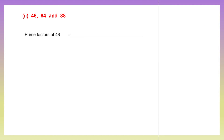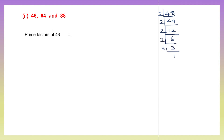Now, 48. Let's find the prime factors of 48 starting with 2: 2 into 24, 2 into 12, 2 into 6, 2 into 3, then 3 into 1. So the prime factors of 48 are 2 × 2 × 2 × 2 × 3.